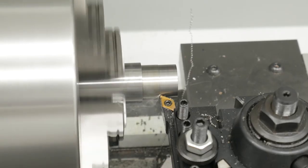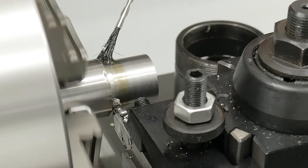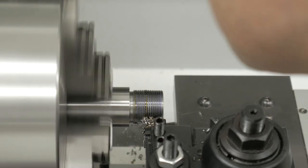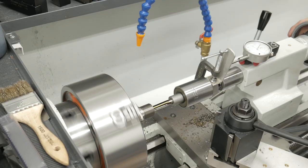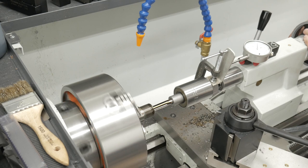In the last video we finished all the barrel work on the breech end. We cut the tenon, threaded the tenon, cut the counterbore, and cut the chamber. Everything turned out great.